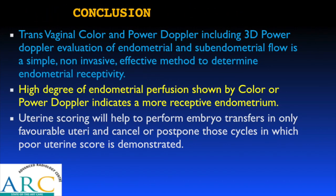In conclusion, transvaginal color and power Doppler, as well as 3D power Doppler evaluation of endometrial and subendometrial flow, is a simple, non-invasive, and effective method to determine endometrial receptivity. A high degree of endometrial perfusion demonstrated by color or power Doppler indicates a more receptive endometrium. Uterine scoring will help perform embryo transfers only in favorable uteri and cancel or postpone cycles in which a poor uterine score is demonstrated. Thank you very much for your attention.